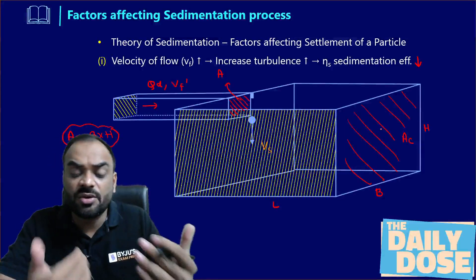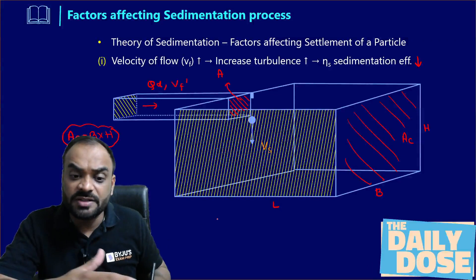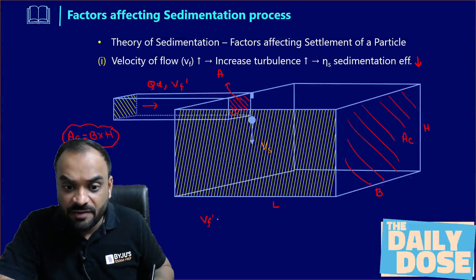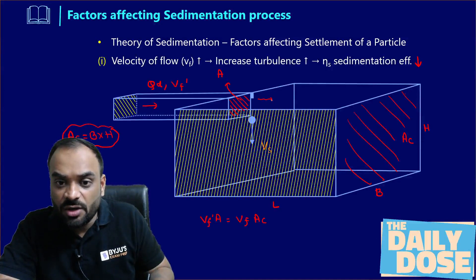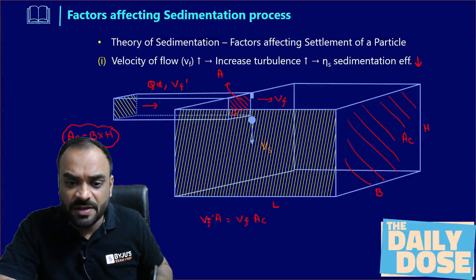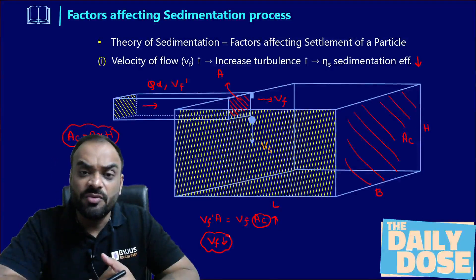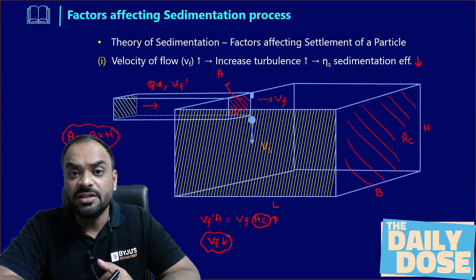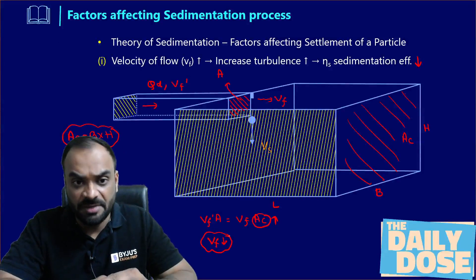If we suddenly increase the cross-section area of the sedimentation tank, the flow velocity will then reduce. Why? Because as per the continuity principle: VF' × A = velocity of flow in sedimentation tank × cross-section area AC. Since AC is very large, the value of VF will get reduced. By this, we are able to reduce the turbulence in the sedimentation tank so that the sedimentation process has more efficiency. This is one factor we have to address, and we are able to do it in the treatment plant easily.